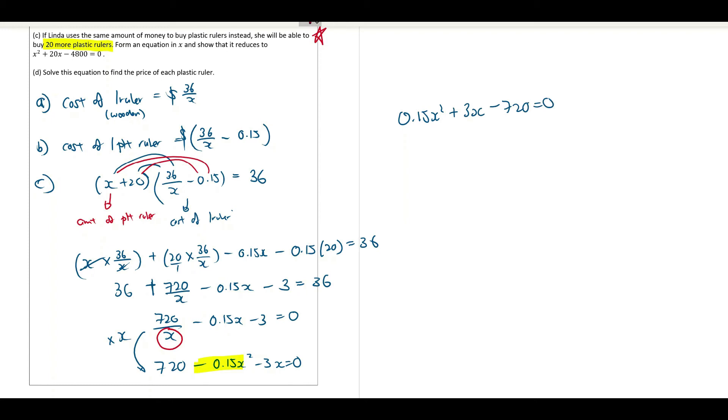So 0.15X square plus 3X minus 720 equals to 0. Next, the equation says I must form to become this. What do I do? I divide everybody by 0.15 so that this 0.15 disappears. Then I will get X square plus 20X minus 4,800 equals to 0. And that is how I did it.